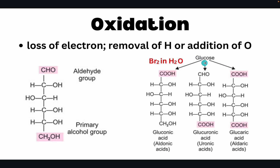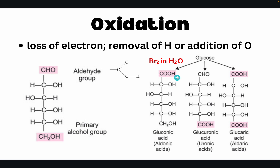When glucose reacts with bromine in water, the bromine acts as the oxidizing agent and adds oxygen to the aldehyde group, breaking the double bond and forming a carboxylic group (COOH). This gives gluconic acid, where the C1 position now has a carbonyl carbon bonded to an OH.